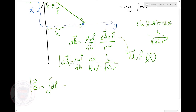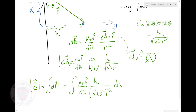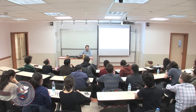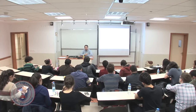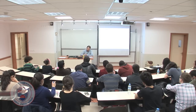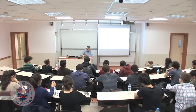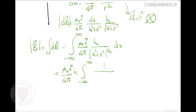So what will be the total magnetic field? It will be the integral of dB, which gives μ₀I over 4π times h over (h² + x²) to the three-halves, times dx. The limits of integration: x goes from minus infinity all the way up to plus infinity. Let me take the constants out: μ₀I over 4π, integral from minus infinity to infinity, and I'll also take h out — 1 over (h² + x²) to the three-halves dx.